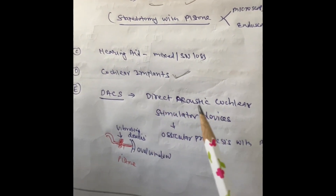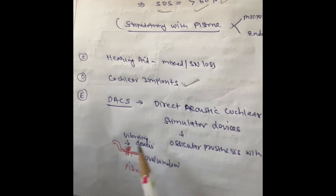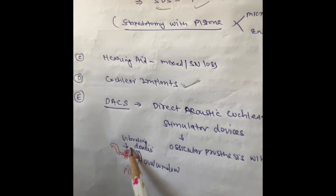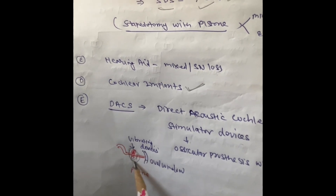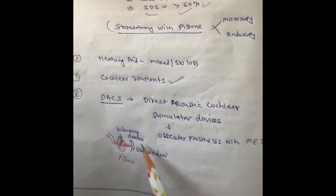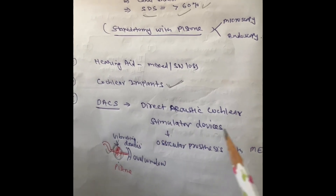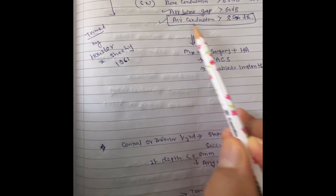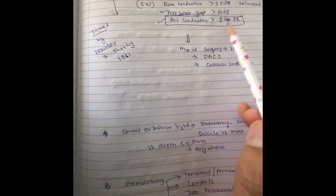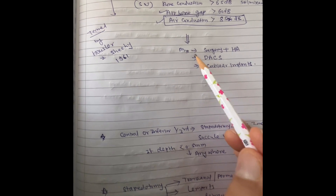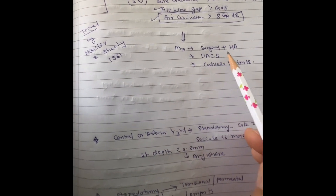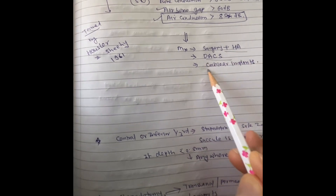A new device called DACS — Direct Acoustic Cochlear Stimulator — involves a piston with a vibratory component placed over the oval window to give better hearing gain in far advanced otosclerosis or mixed hearing loss. Far advanced otosclerosis is defined as air-bone gap more than 60 dB and air conduction more than 85 dB on PTA. This term was given by House and Sheehy in 1961. Management includes surgery, hearing aid, DACS, and cochlear implants.